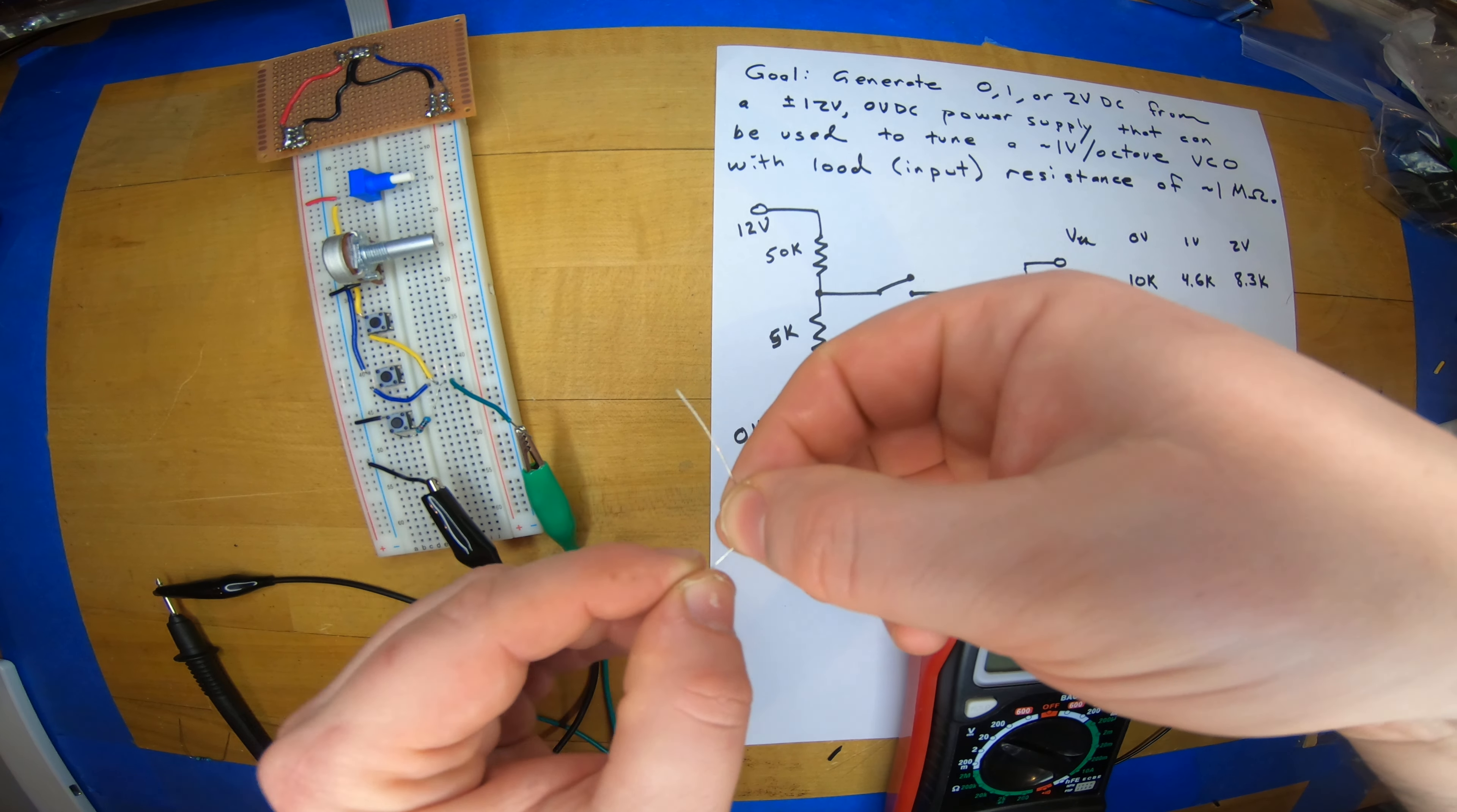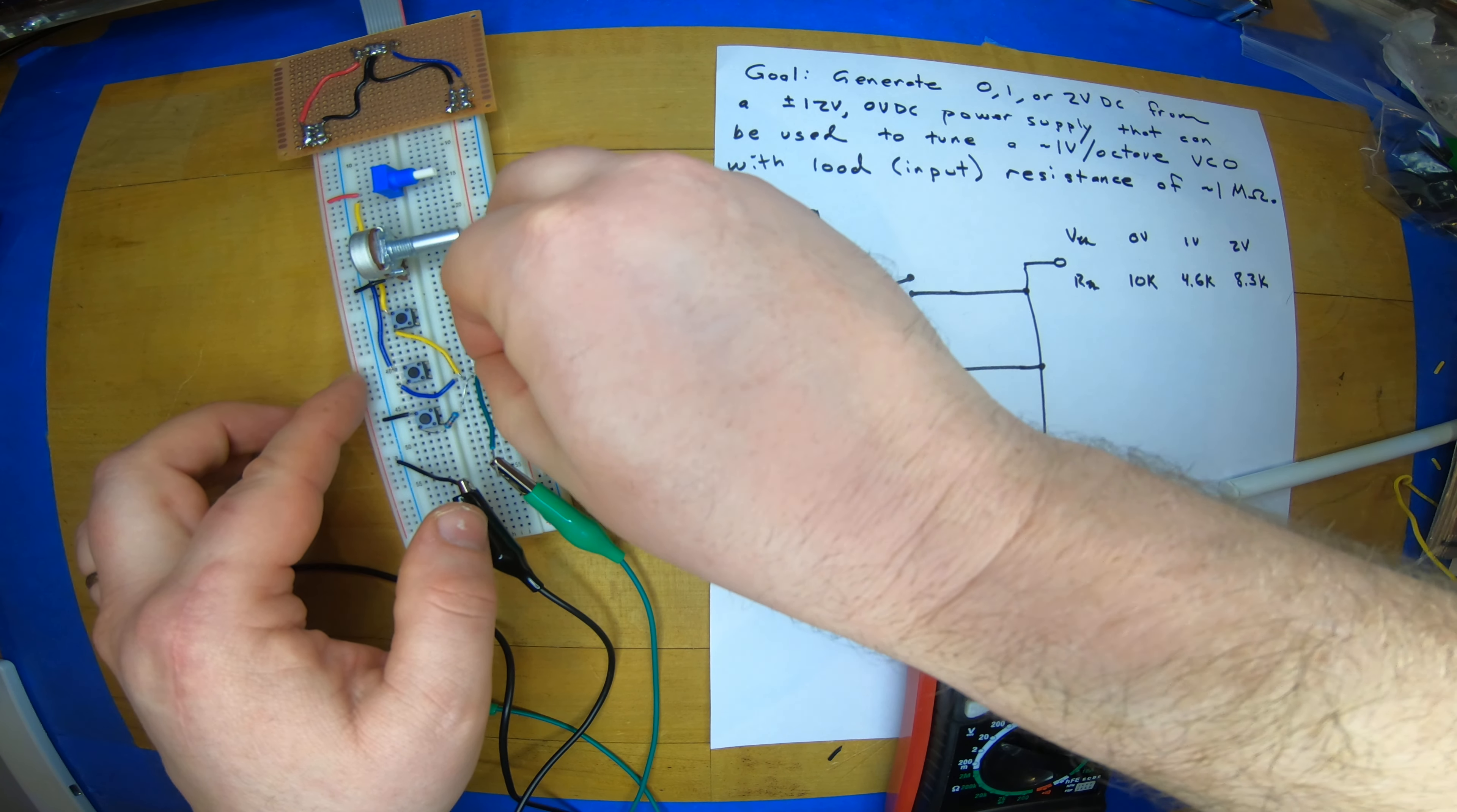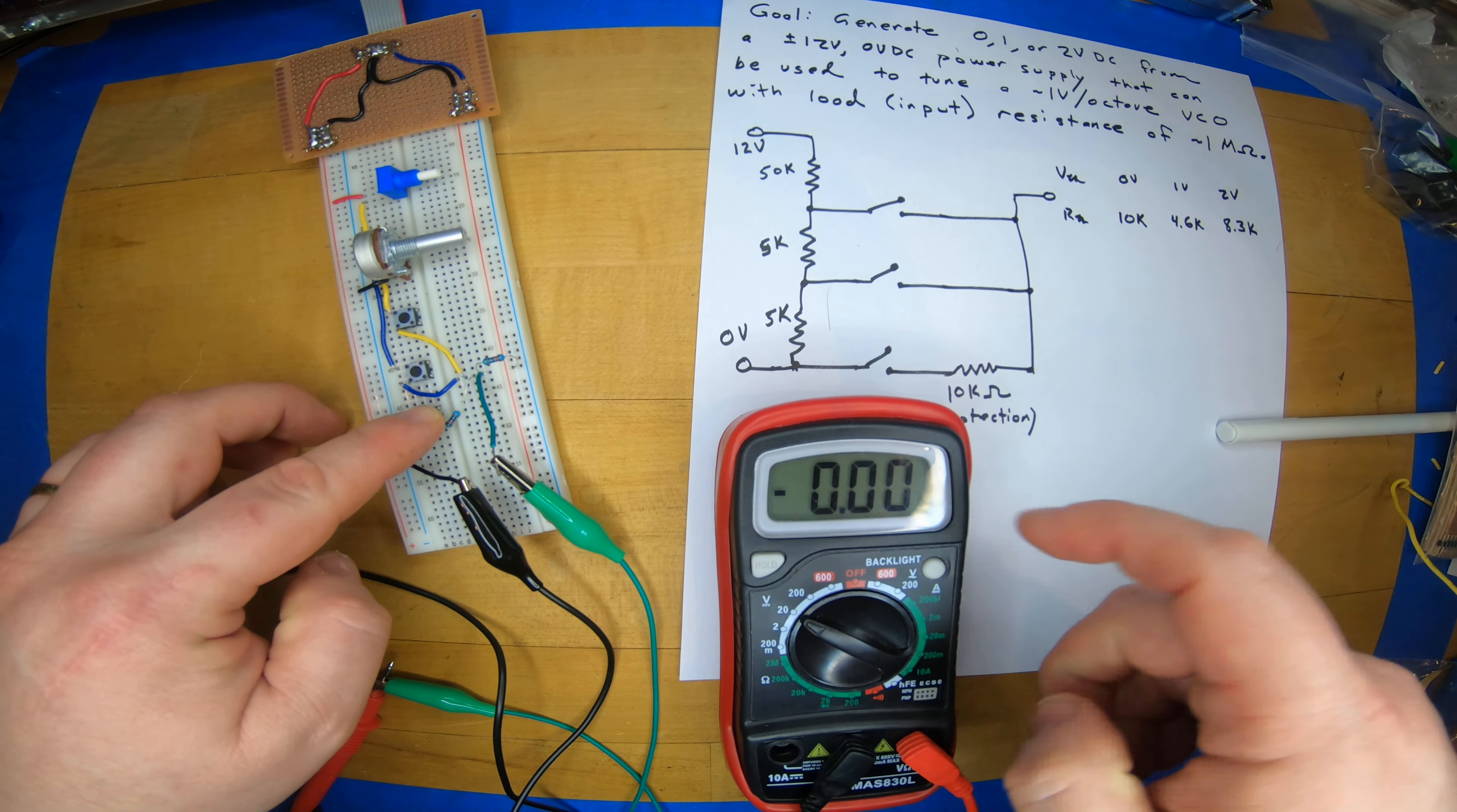Again, it's a 10K resistor as a load. So let's give that a try. I put it from ground. And 0 divided by 2 is 0.